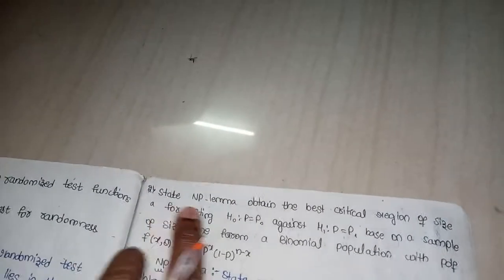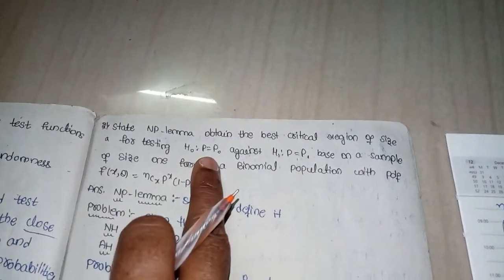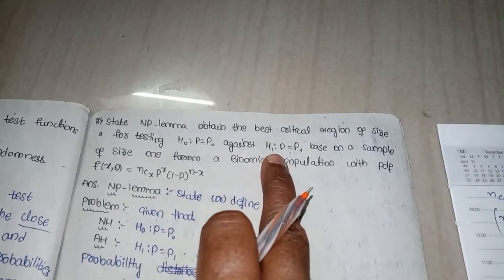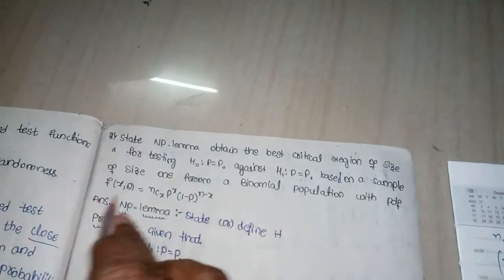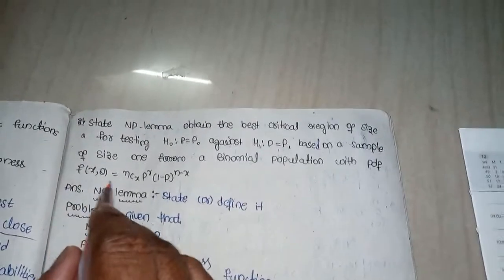Problems on NP Lemma. State NP Lemma and obtain the best critical region of size alpha for testing H0: P equals P0 against alternative hypothesis H1: P equals P1, based on a sample of size M from a binomial population with the PDF f(x, theta) = NCX * P^X * (1-P)^(N-X).